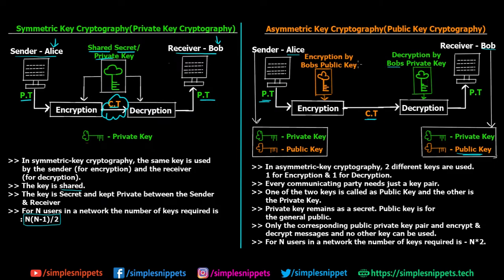The key point is that receiver Bob can perform decryption using only Bob's private key. Because Alice encrypted using Bob's public key, the ciphertext can be decrypted only by Bob using his private key. If another person, say Tom, has his own public and private keys and tries to decrypt the ciphertext, he won't be able to — because only Bob's private key can decrypt this message. Since Bob's private key is private to him, only Bob can decrypt and recover the plain text.